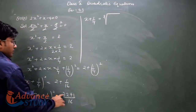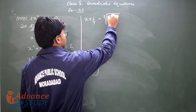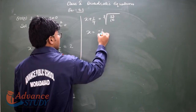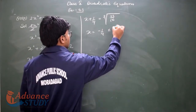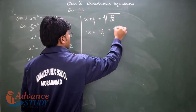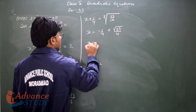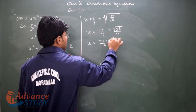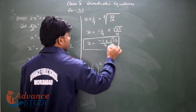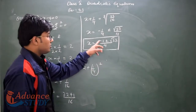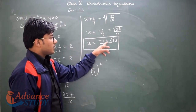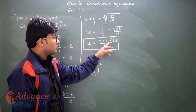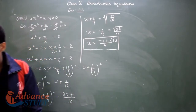Taking square root with plus minus: x + 1/4 equals plus minus √(33/16). Since 16 is 4 squared, this gives x + 1/4 equals plus minus √33 upon 4. Moving 1/4 to the other side: x equals minus 1 plus minus √33 upon 4. So the two roots are x = (-1 + √33)/4 and x = (-1 - √33)/4.